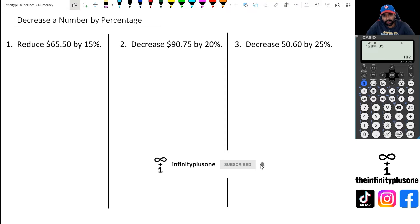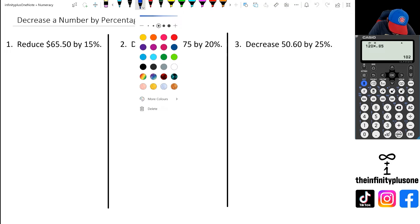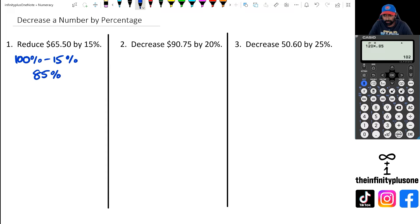Okay, so the first thing we're going to do is we're going to work out a number that we can multiply 65.50 by so that it actually does everything for us. Think about it like this: we've got 100 and we're going to take away 15, so when we do that we're actually going to end up with 85. That's actually remaining, so all we're trying to do is we're trying to work out 85% of 65.50.